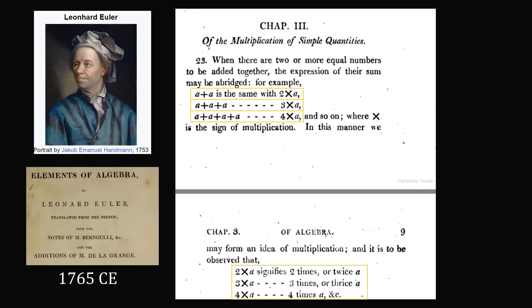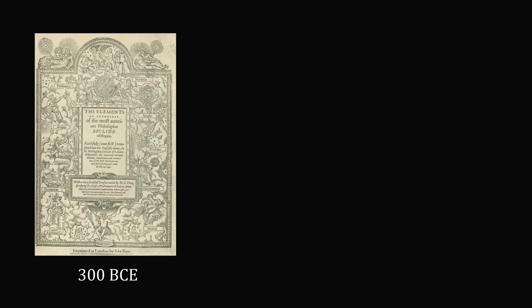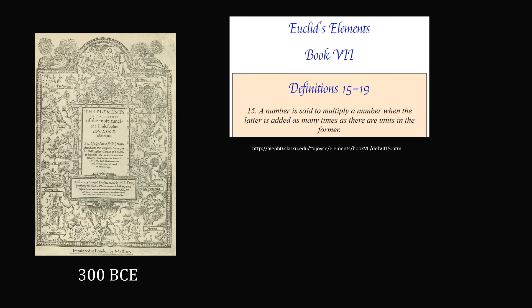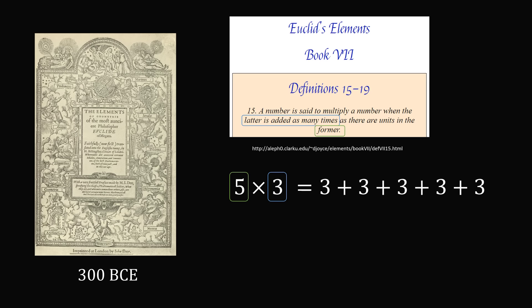If that doesn't satisfy you, let's go back even further — to Ancient Greece and the mathematician Euclid, most famous for his work on geometry, who also published several books on number theory. In Book 7 of Euclid's Elements, he gives a definition for multiplication: a number is said to multiply a number when the latter is added as many times as there are units in the former. So the latter number is added as many times as there are units in the former number. For 5 times 3: the latter number is 3, the former is 5, so 5 times 3 equals 5 groups of 3, or 3 plus 3 plus 3 plus 3 plus 3. This goes back thousands of years.